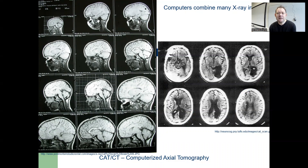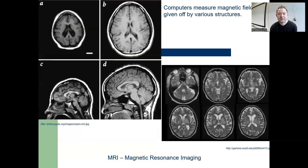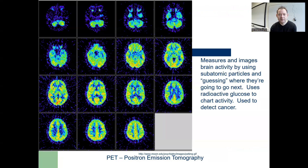Computers can combine many X-ray images in various ways. This allows for CAT scans or CT scans — computerized axial tomography — and various software can be used to analyze those images to look for things like brain tumors, lesions, any kind of abnormal activity, or just to look at normal activity in the brain. Computers can also measure magnetic fields given off by various structures — this is how MRI works, magnetic resonance imaging. PET, positron emission tomography, measures brain activity by using subatomic particles and uses radioactive glucose to chart activity. It's used to detect cancer, for example.